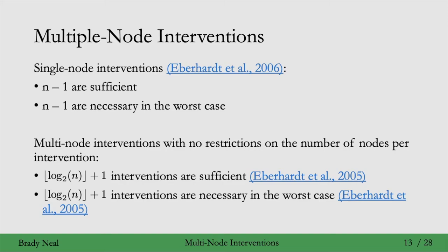This is necessary in the worst case as well, where the worst case is the complete graph. You can see the paper from Eberhardt et al., 2005, to learn more. This is the number of interventions we need in the worst case.